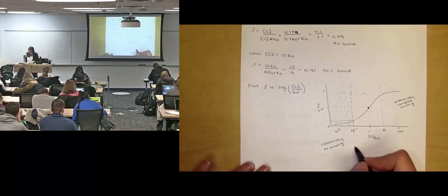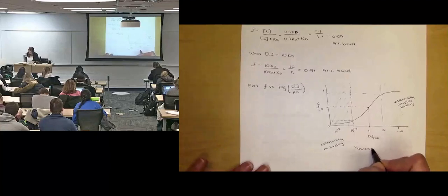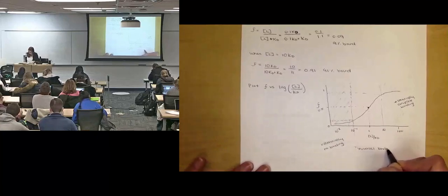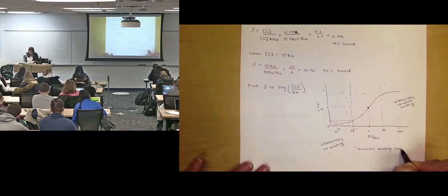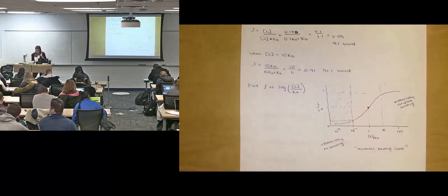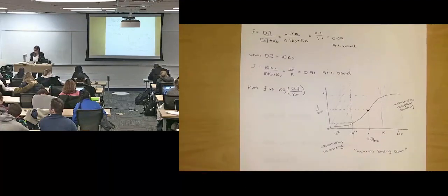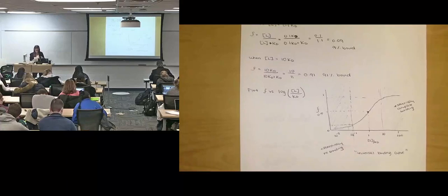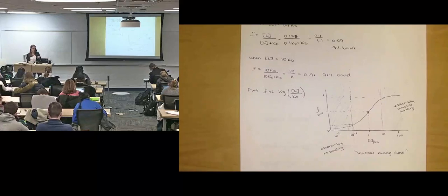And so we call this the universal binding curve. We need to use log because the concentrations of interest generally span a couple orders of magnitude.